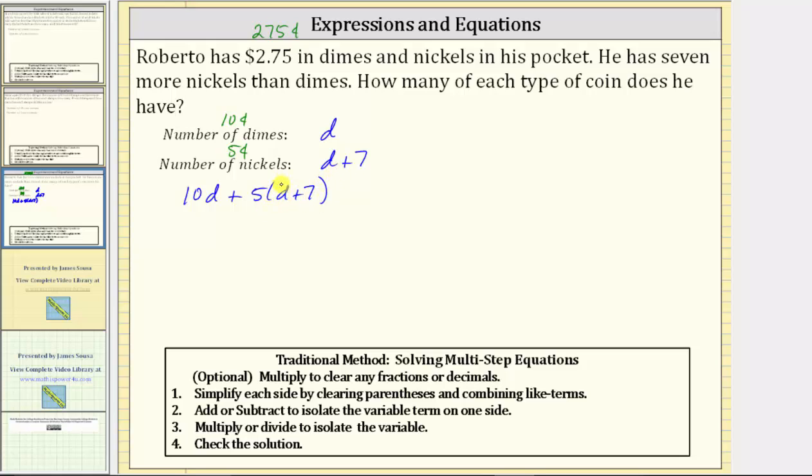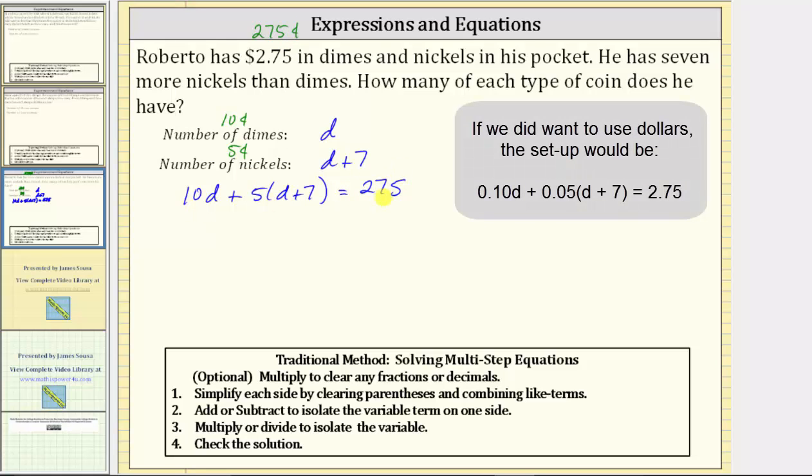So this expression gives the total value of the coins, which we know has a value of 275 cents. And therefore we can set this expression equal to 275. And now if we solve the equation for d, we can determine the number of dimes and the number of nickels.